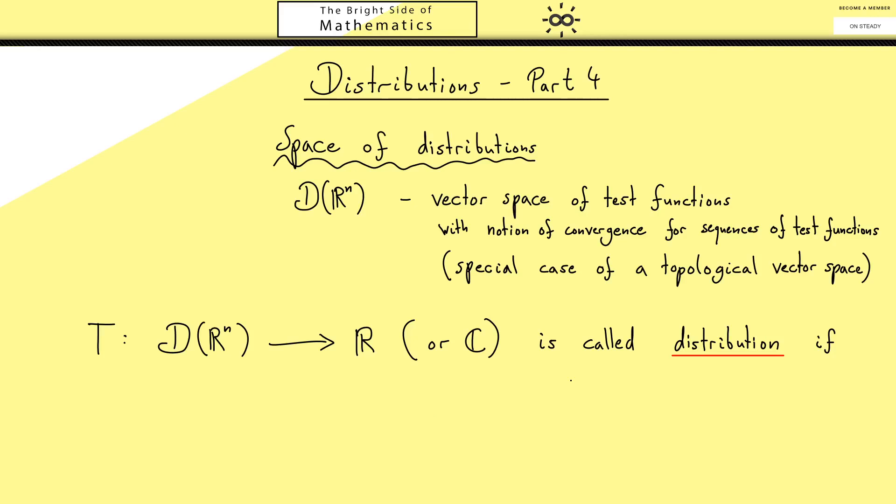Of course that is not enough. We also need two conditions here. The first one we already know: we want that this map is a linear map. For that we need our vector space structure. More concretely, if you have two test functions phi1 and phi2, we can pull out the addition. And the same holds for the scalar multiplication. In other words, the map is additive and homogeneous, and together we call that linear.